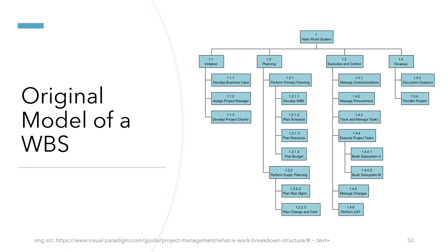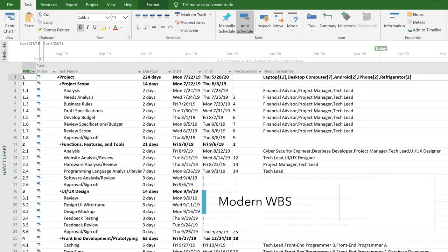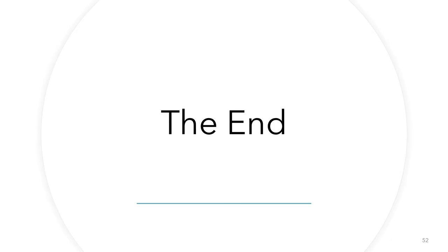Here is the original model of a work breakdown structure — you can see how some tasks are split into smaller subtasks. This is a more modern work breakdown structure that I made through Microsoft Project. You can see the work breakdown structure on the far left column, along with tasks, duration, start and end times, which tasks precede which, and resources such as materials or workers. There are also many other interesting features in Microsoft Project, making it a very powerful tool for project management.